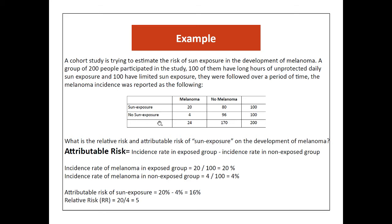We calculate the incidence rate in the exposed group and non-exposed group. For the exposed group, it's 20 divided by 100, that's 20%. The incidence rate in the non-exposed is 4 divided by 100, that's 4%. The difference is the attributable risk, which is 16%. The ratio is the relative risk, which is 20 divided by 4, that's 5.